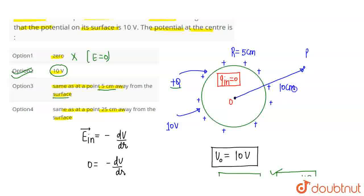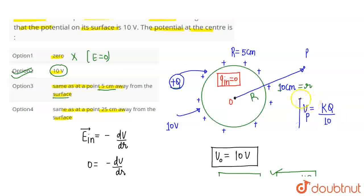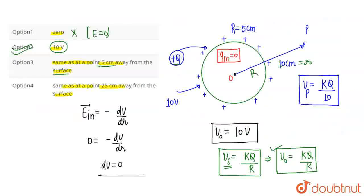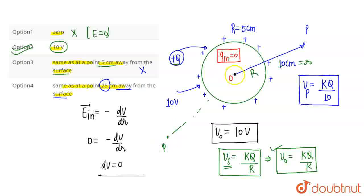The distance from the center will be 10 cm. Why? Because we always measure distance from the center. If the surface is 0.5 cm from the outer point and the radius is 5 cm, then the total distance from center is 5 + 5 = 10 cm. So at a point r = 10 cm from the center of the hollow spherical conductor, the potential V = KQ/r = KQ/10, which is not equal to the center potential KQ/5.